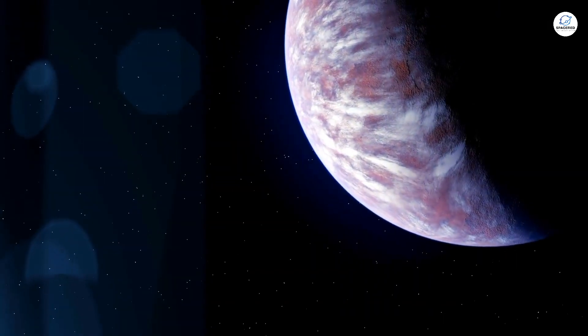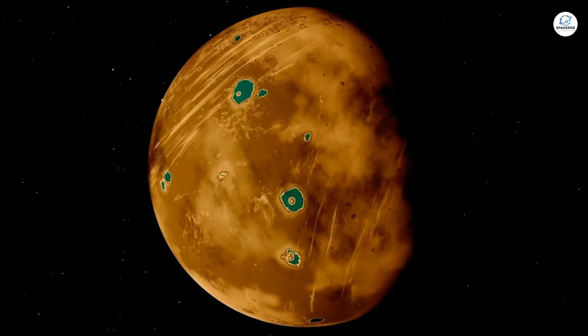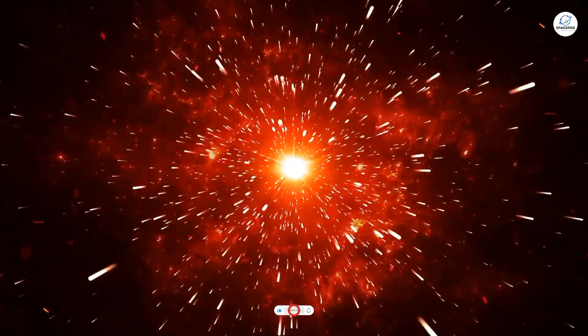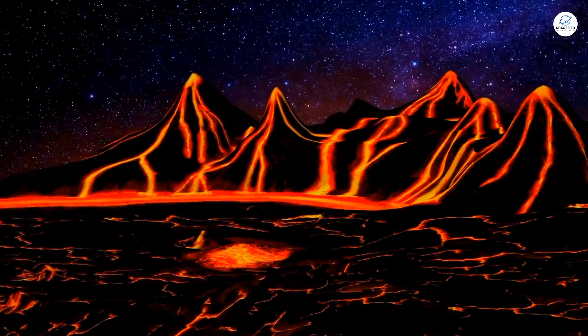But if GJ 1214b sounds like a nightmare, Kepler 10b is even worse. This planet, located 560 light-years away, is almost entirely covered in lava oceans.